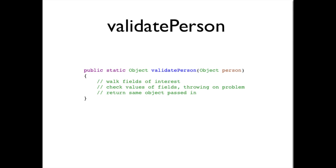Now let's look at that validatePerson. In general, the job of validating an entity can be summarized as traversing the fields of interest, checking that those fields have sensible values, indicating if they don't. In Datomic, you'd indicate that they do not by throwing an exception. And then finally, for convenience, we'll return the same object passed in if it's valid.